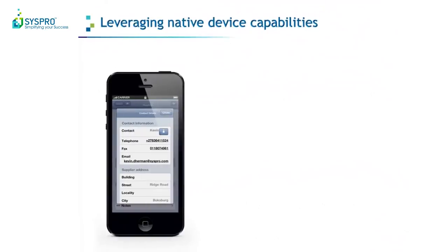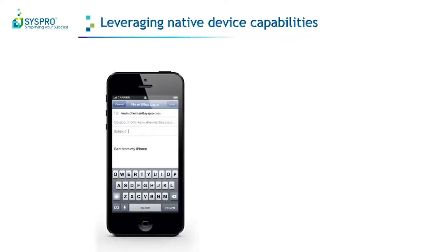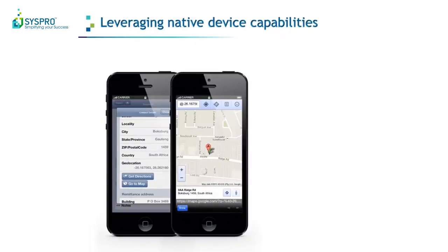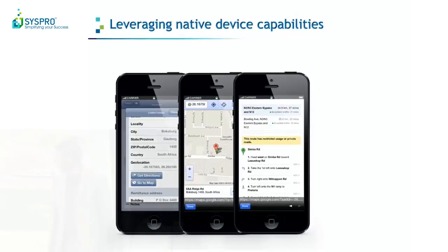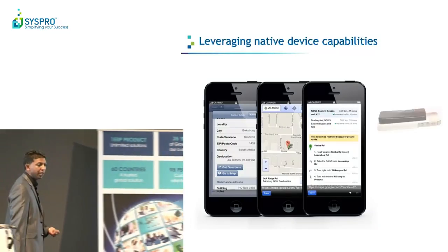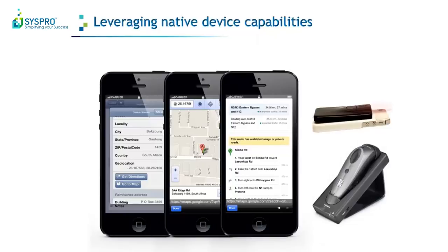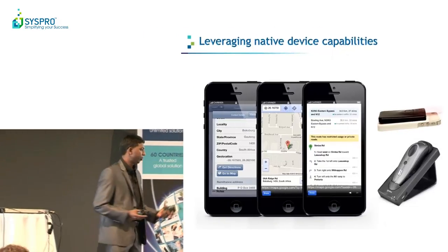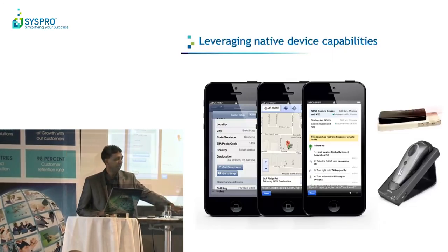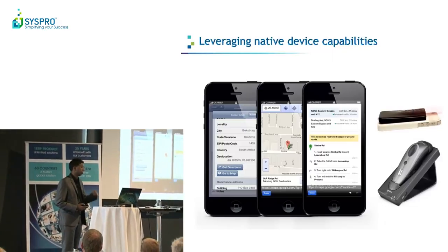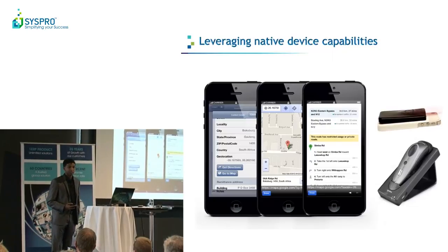If you're at the contact details screen and click on a user's email address, it will take you to the device's native email application. It also allows you to use the device's GPS capabilities. If you find an address on any one of the Syspro applications, you can choose to get directions or show a map. We've taken it further to allow you to use these devices in the warehouse for scanning. We're even taking Espresso into the warehouse — I have a scanner hooked up to my iPhone right now, and you can literally just go scan, scan, scan. I also have one that works off Bluetooth for iPad as well. We can scan QR codes, PDF codes, and normal barcodes.